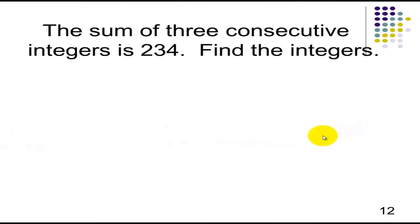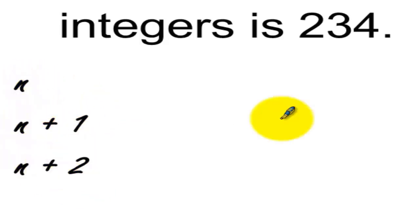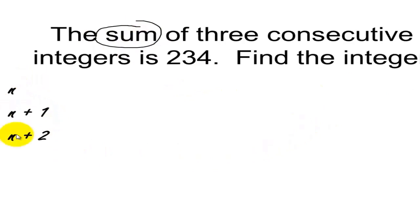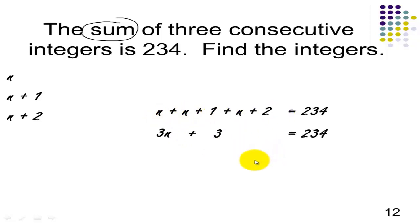Let's have our first example. The sum of 3 consecutive integers is 234. Find the integers. We can use the expression n, n plus 1, n plus 2, where n is our first number. The sum equals 234, so we add: n plus (n plus 1) plus (n plus 2) equals 234. Combining like terms: 3n plus 3 equals 234. Subtract 3 from both sides to get 231, then divide by 3 to get n equals 77.